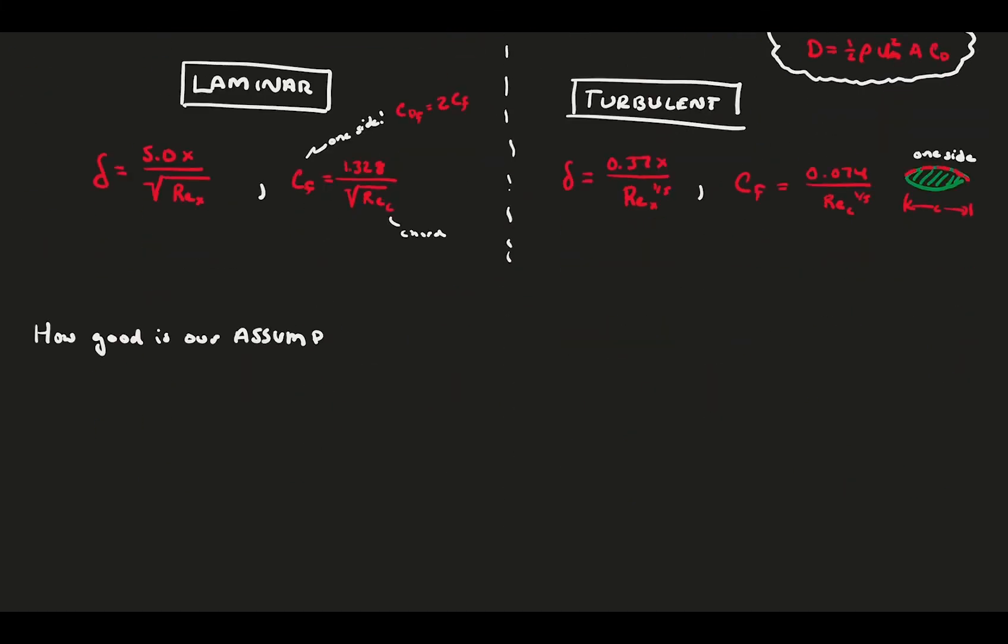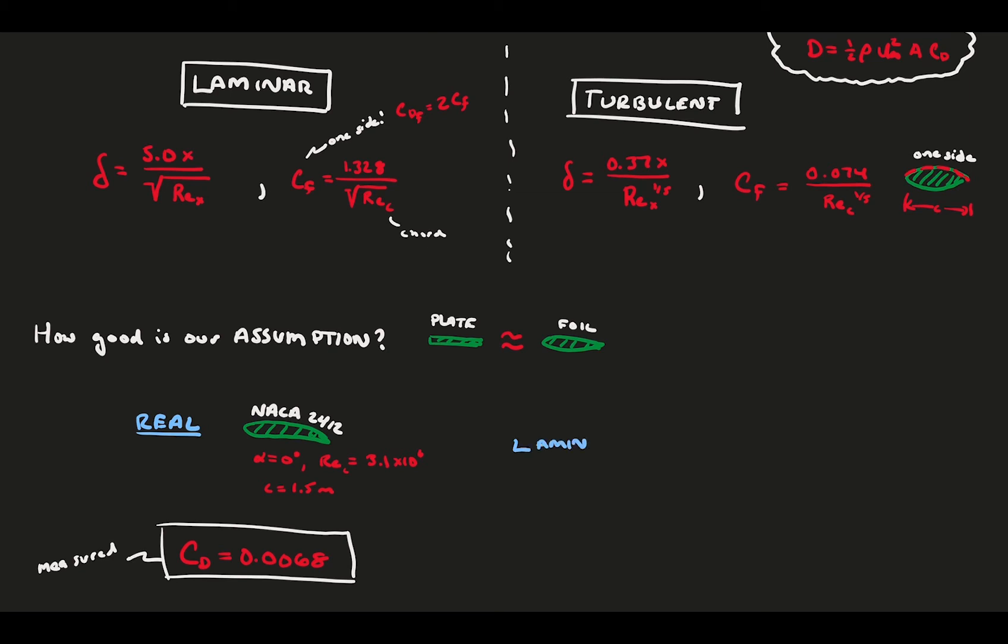It would be fair of you to ask, is this even a good assumption? Can we consider the foil as a flat plate? Let's gather up some NACA 2412 data at a Reynolds number of 3 million, a chord of 1.5 meters, and we'll get a drag coefficient for measurements of CD equals 0.0068. If we used purely laminar flow and the equations above with our conditions, we would find an absolutely tiny boundary layer height of 4 millimeters.